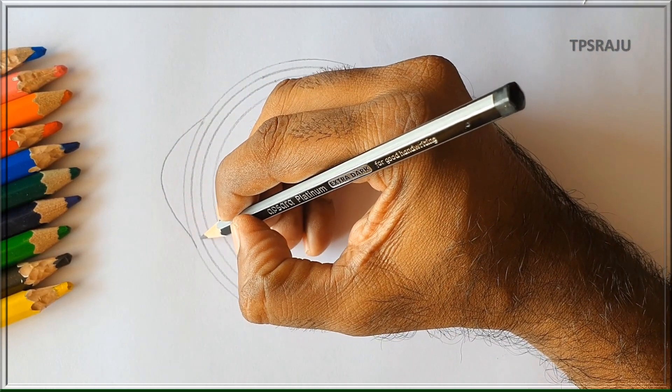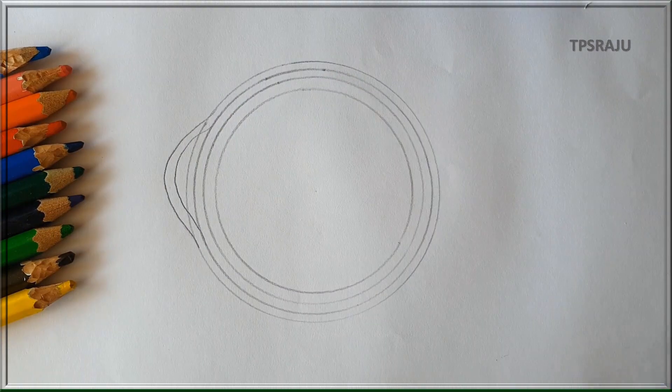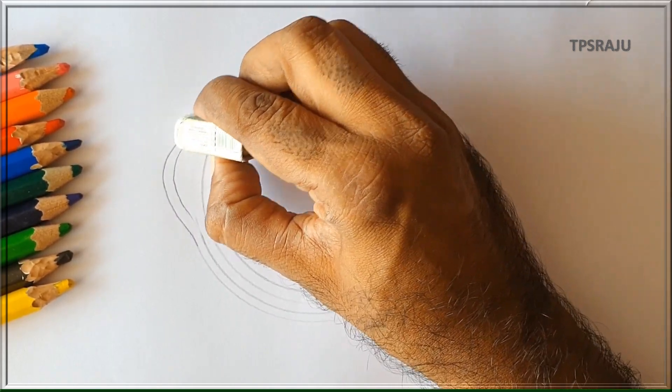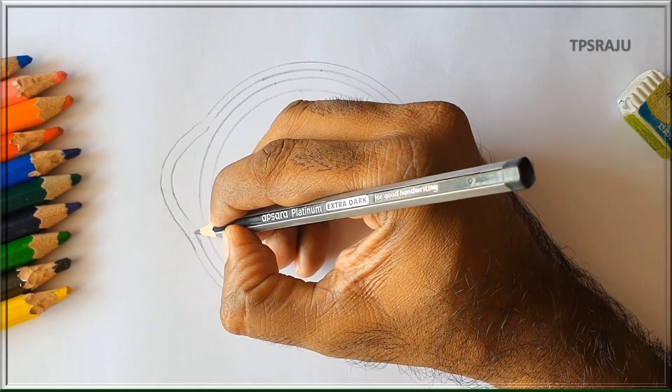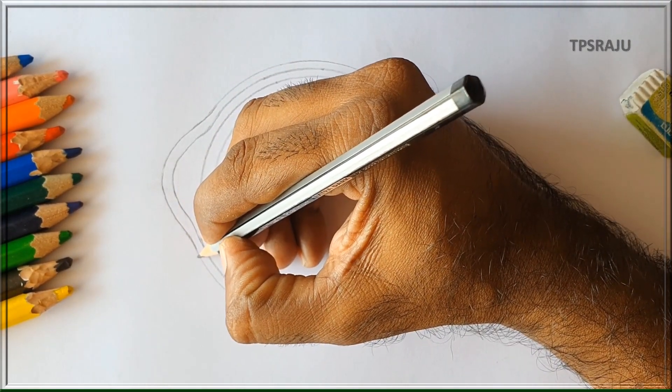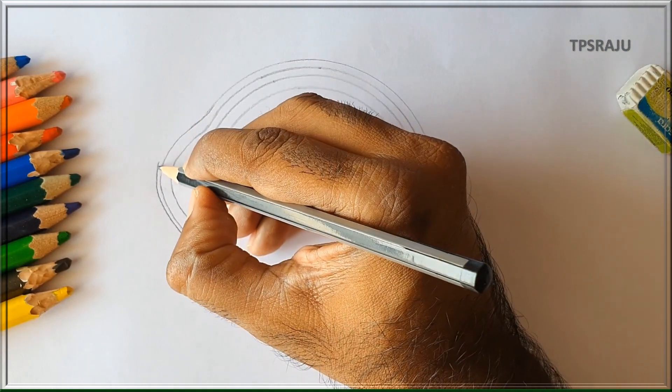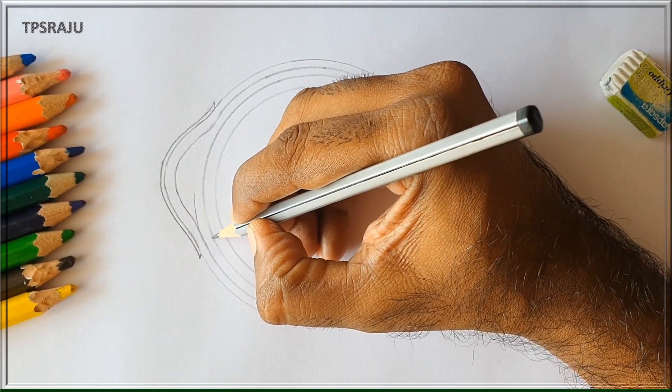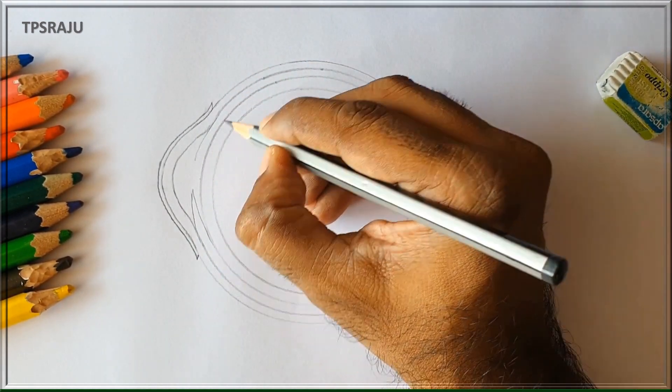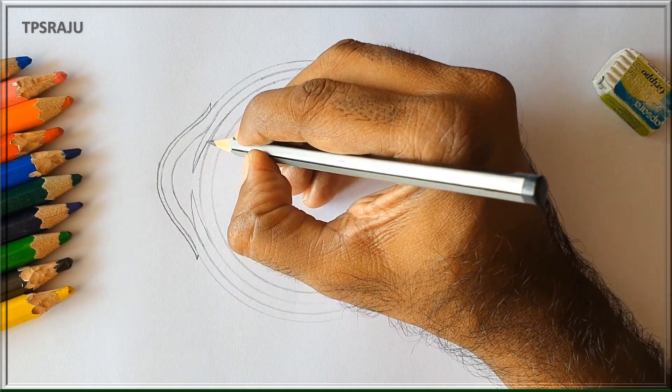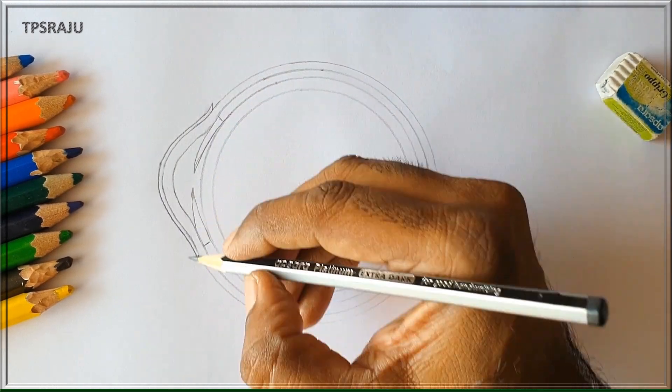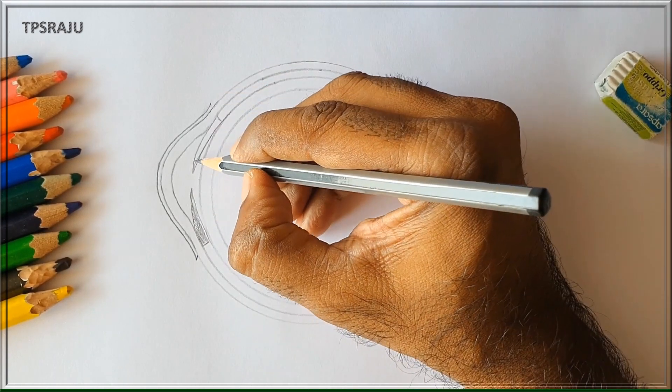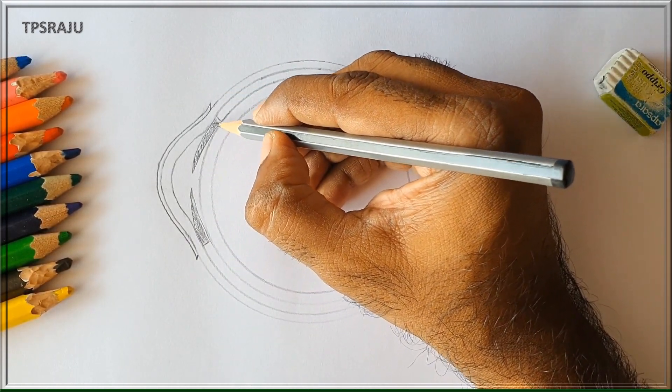The outer sclerotic layer bulges and forms cornea in the front portion of the eye. This is cornea. Cornea is covered by a thin transparent layer called conjunctiva. The middle choroid forms a black circular structure called iris. The hole present at the center of iris is called pupil.